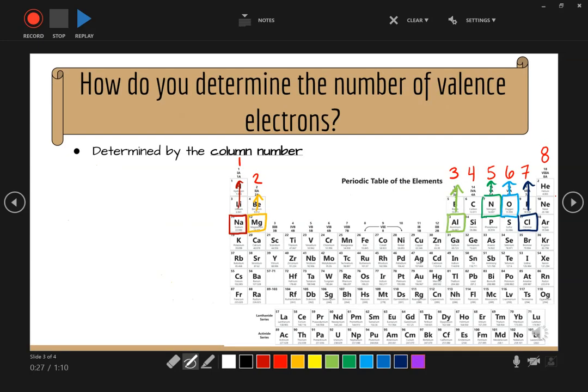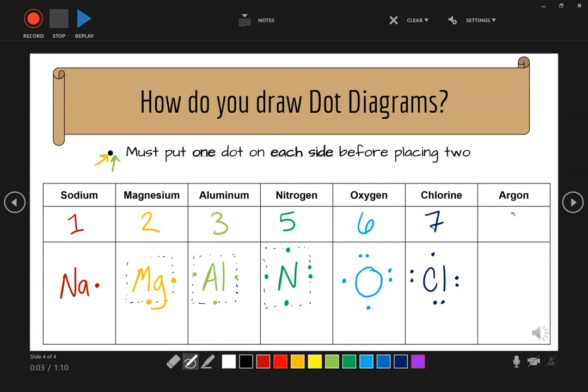And our last example here, argon. Find argon on the periodic table. And it's in the last column. So it has eight valence electrons. So the symbol was Ar. And we're going to put eight dots. So two, three, four, five, six, seven, eight.